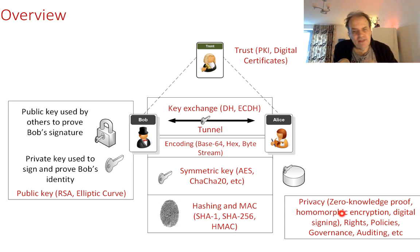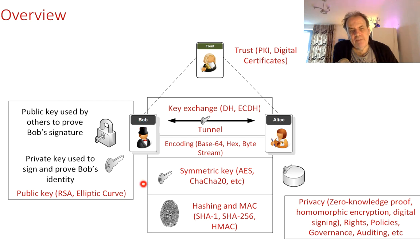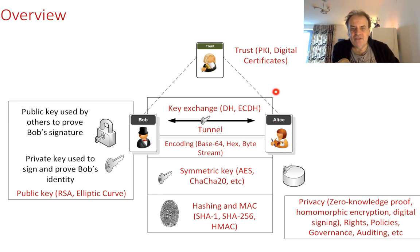Other areas include privacy — why send passwords over the network when you can just prove you know your password without revealing it? That's zero knowledge proofs. Homomorphic encryption allows processing on values without actually knowing what they are. Digital signing is increasingly important, allowing one or many people to sign data. Then there are rights of access, governance, and auditing. Altogether we need to build an understanding of how this jigsaw puzzle fits together to make our systems secure.